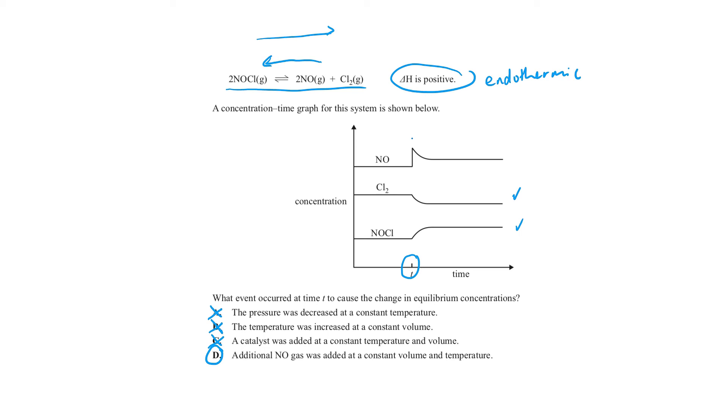Now, because we're adding more product, the back reaction should be favoured. So our chlorine should slowly go down, which has happened, and our NOCl should slowly increase, which has happened.